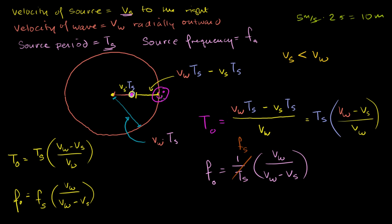We were able to do that by just doing a thought experiment, saying: my object starts here. After one period — a period is just a measure of time, the measure of time over which the source emits a cycle, so it emits a cycle every period — after one period, where is that first wave front or first crest, and where is the source? Because exactly one period has passed, the source will be ready to emit another crest. So the distance between where the source is and that first crest is going to be the wavelength, because the next emission travels at the same velocity, separated by that distance.